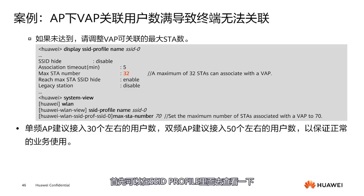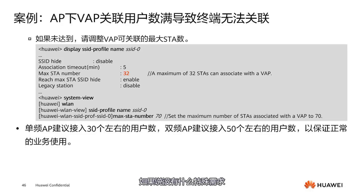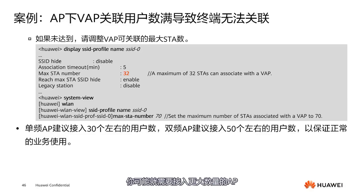Another aspect is how to adjust the number of terminals associated with a VAP. In the SSID profile, the default maximum association might be 32. You can adjust it — for example, to 70. A single-band AP is recommended for 30 users, and a dual-band AP for 50, but this is not absolute and depends on your needs. If there are specific bandwidth requirements, like a media company running a video website, you might need to connect a larger number of APs to ensure sufficient bandwidth usage.